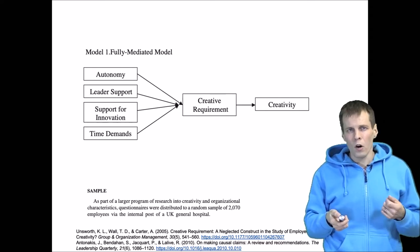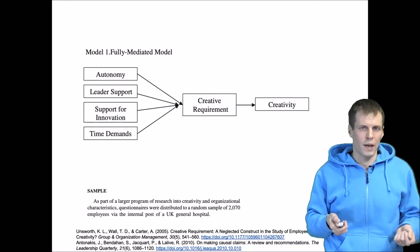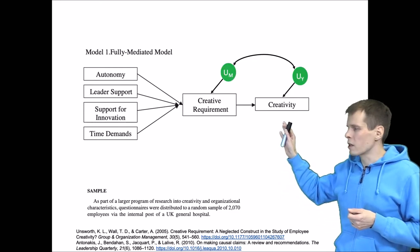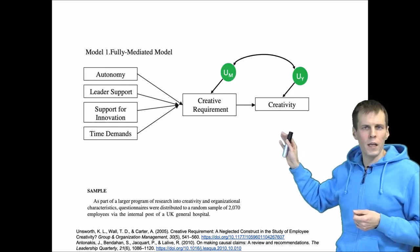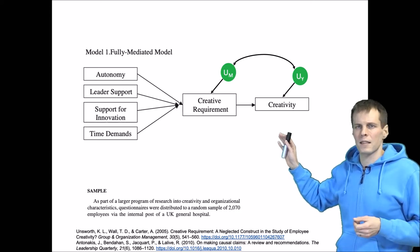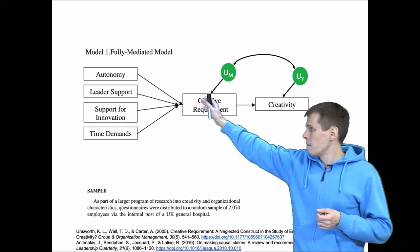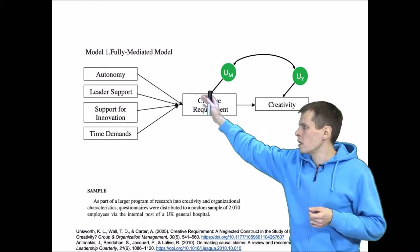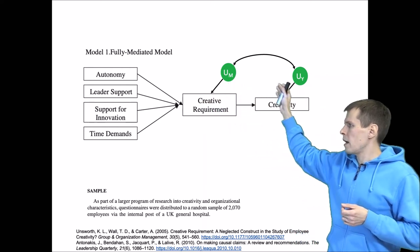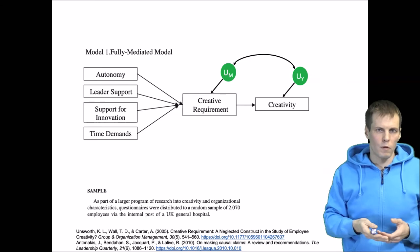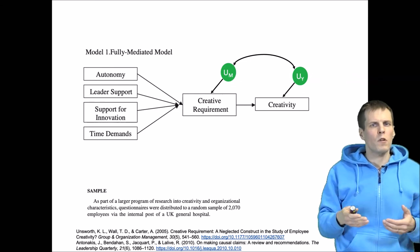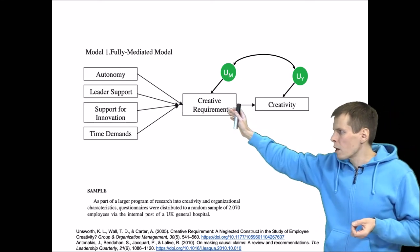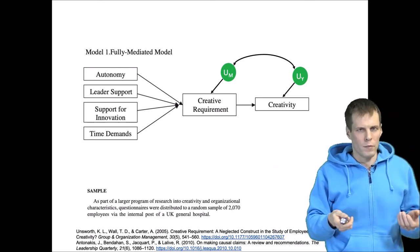However, that is not the only choice that they could have made. Another appealing alternative is to simply have these error terms to be correlated. The full mediation model simply states that there are full mediation relationships not adequate for explaining the correlation between creativity and autonomy. If we add this endogenous relationship here, then we can improve the model fit. So which one is more theoretically appealing: having these omitted causes of creativity and creative requirement to be correlated, or having a partial mediation model?